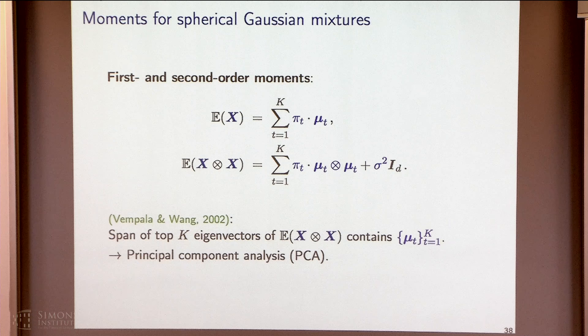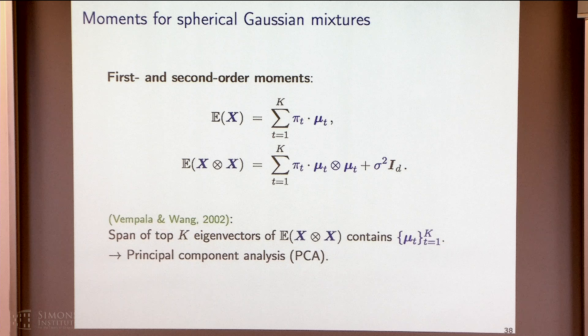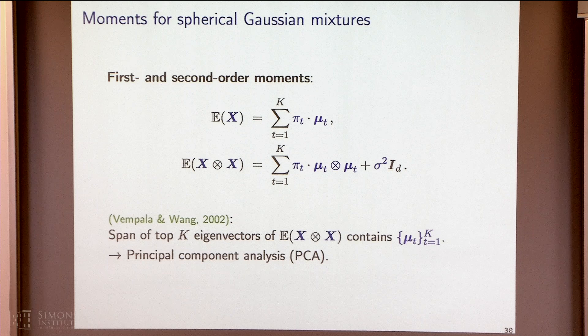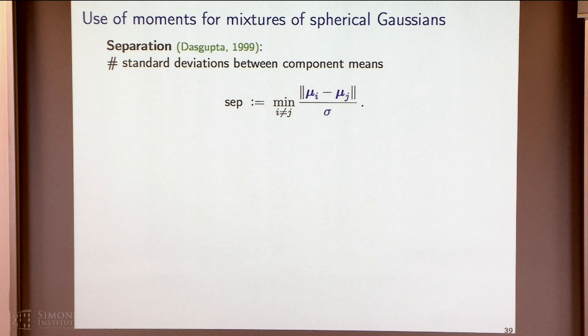Does this require some separation? No, this doesn't have anything to do with separation — no separation needed here. So if you just did PCA — look at the second moment matrix, do eigendecomposition, and project the data onto the top k eigenvectors — that subspace will contain all of the mean parameters. Of course, you have to estimate this matrix, but let's ignore that issue for now.